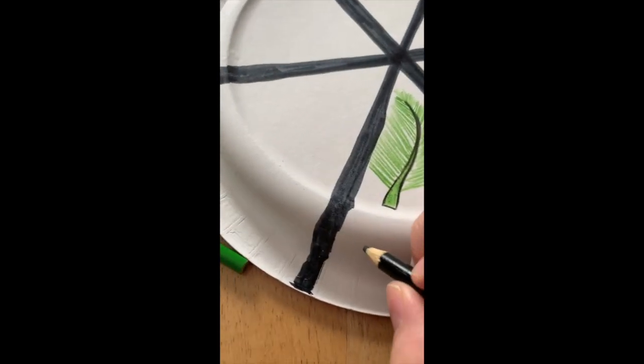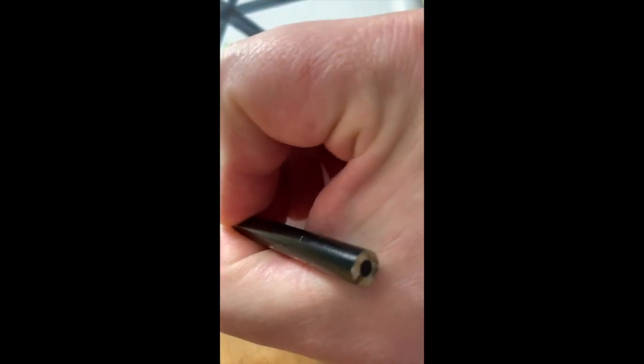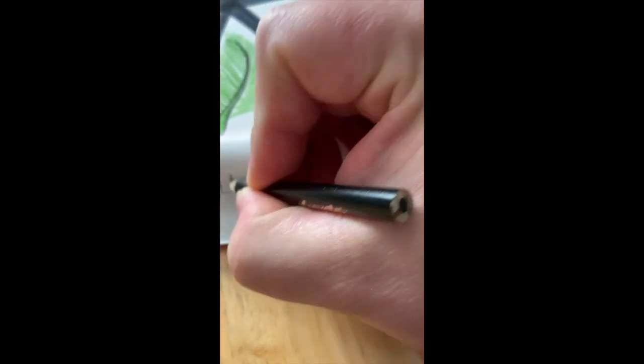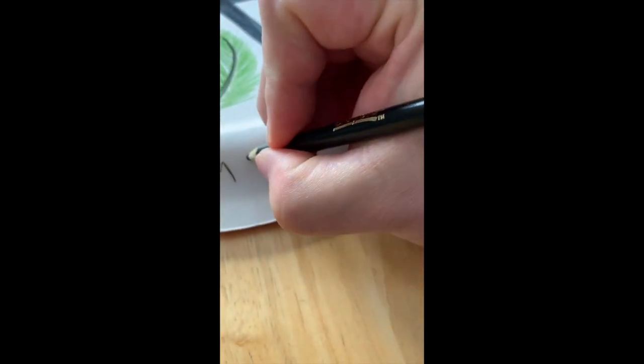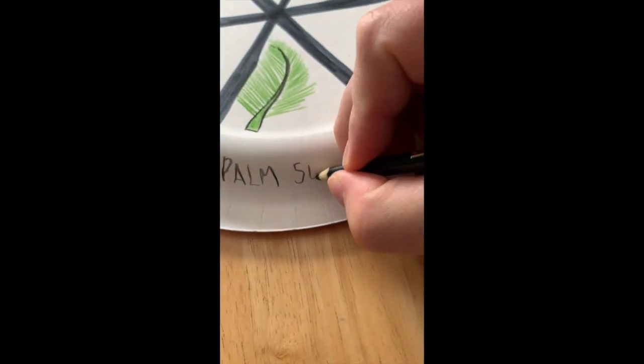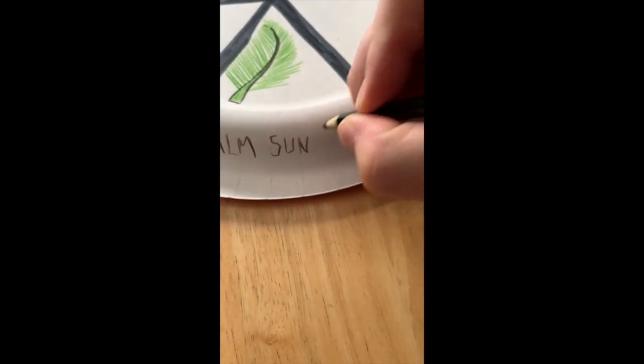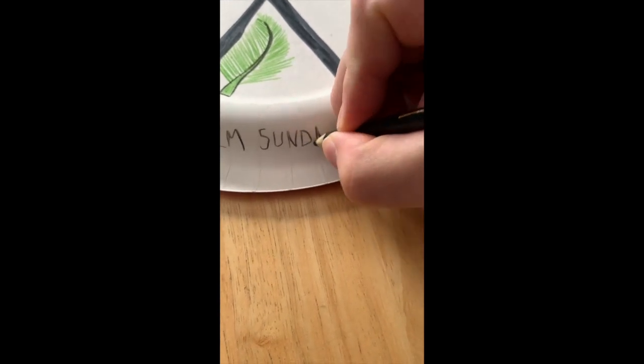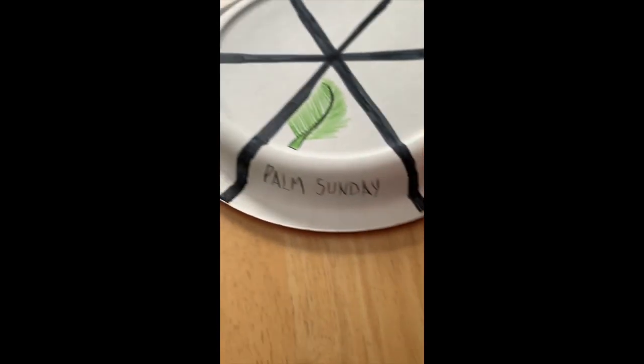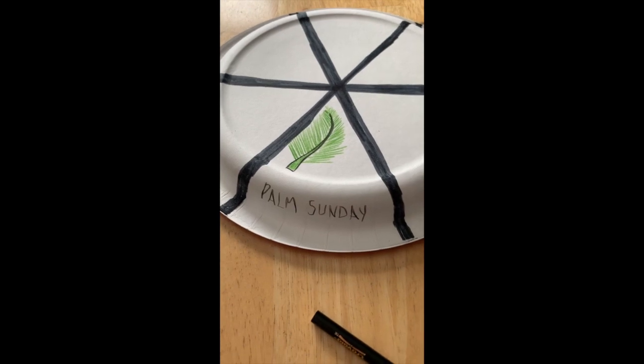On the first piece you're going to want to draw a palm branch. And then once you're finished drawing your palm branch, you can label it as Palm Sunday: P-A-L-M, and then Sunday, S-U-N-D-A-Y. I also added the word Hosanna on the top of mine.